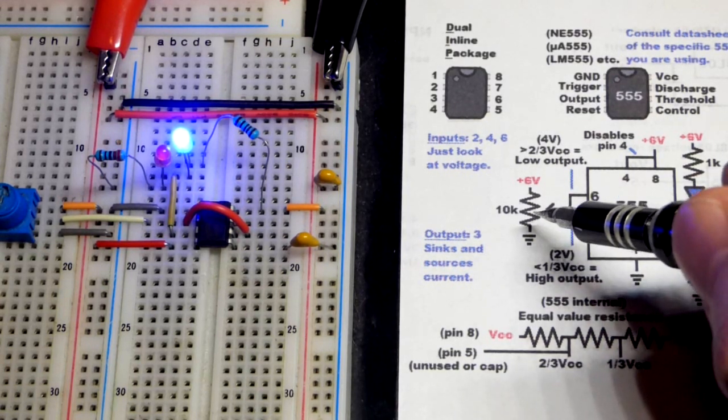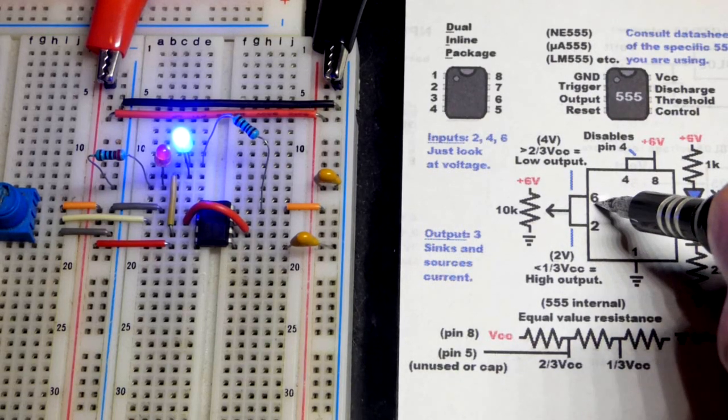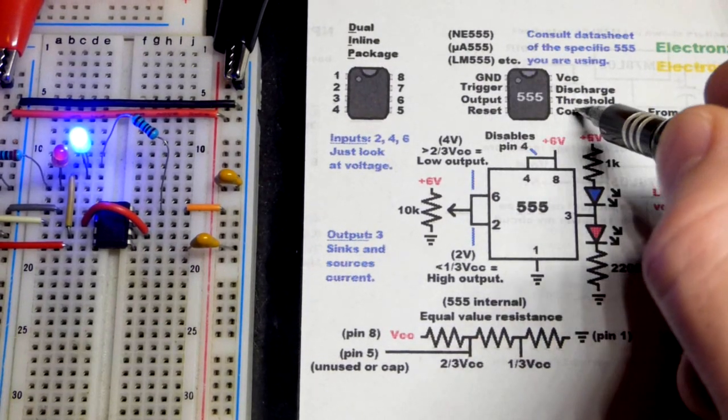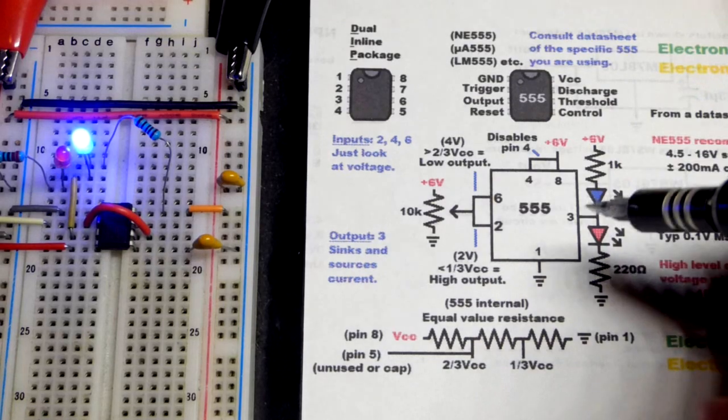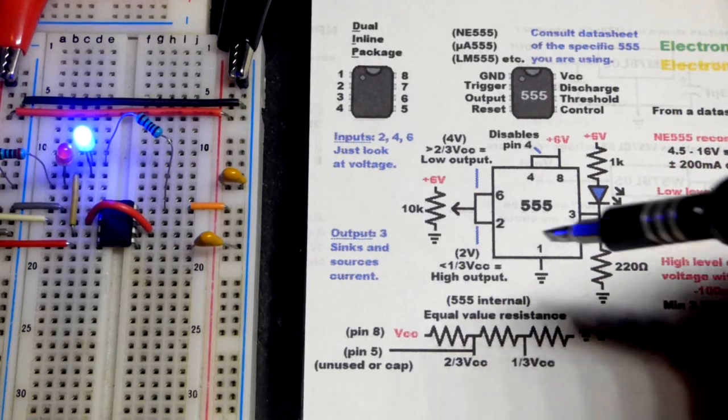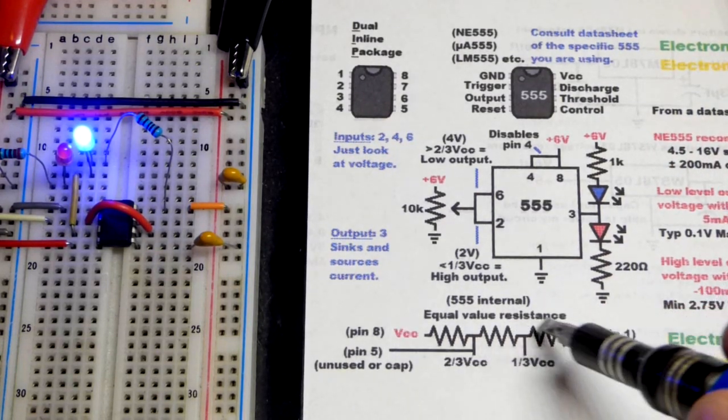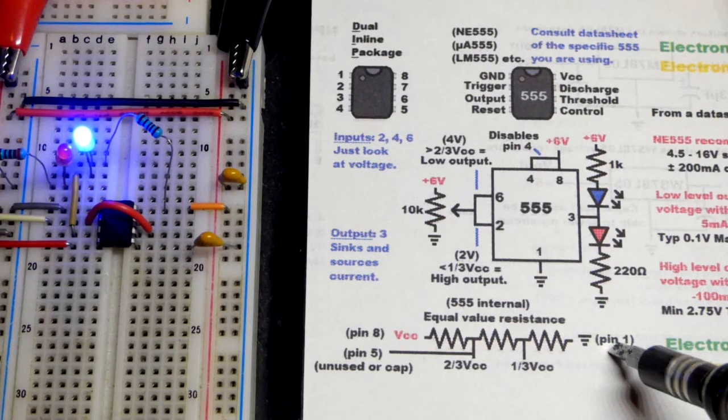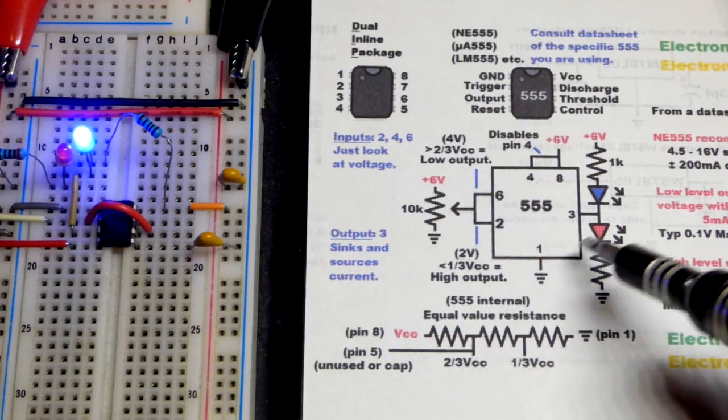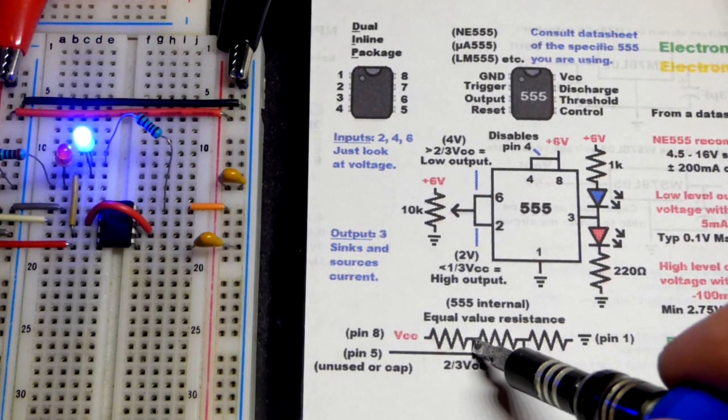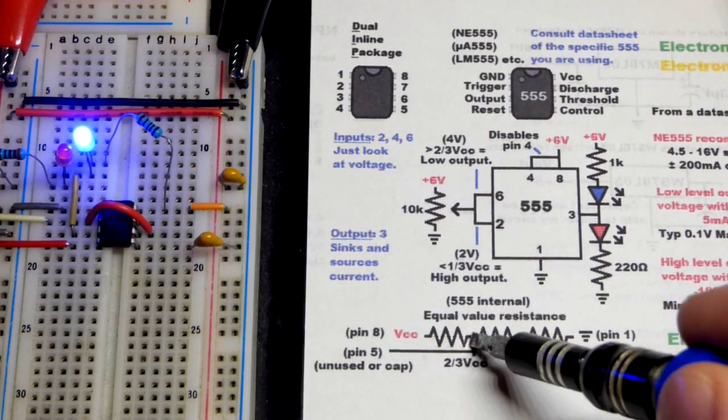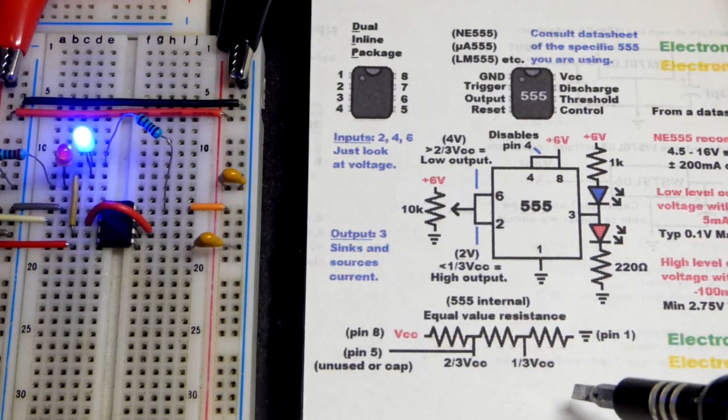And the side with the least amount of resistance, that's where the voltage is going to be closer to. So pin 6 is an input, it's a threshold. Pin 2 is an input, a trigger. They just look at the voltage. That's all they care about. And they switch the output accordingly, as we saw before with 1 third and 2 third supply voltage. So as I said before, there is a voltage divider with 3 resistant areas that are equal value. And pin 5 connects directly to the upper side, right there, closer to VCC, which is at 6 volts in this case.